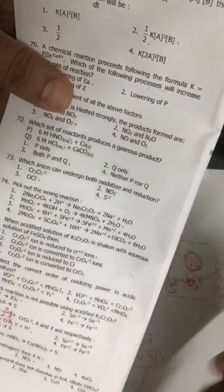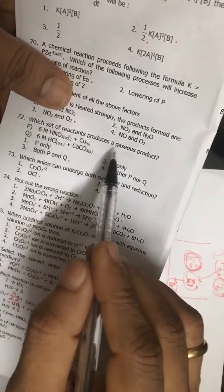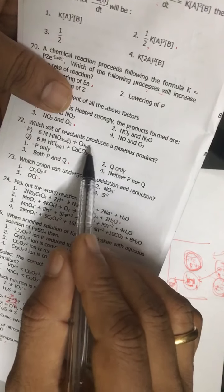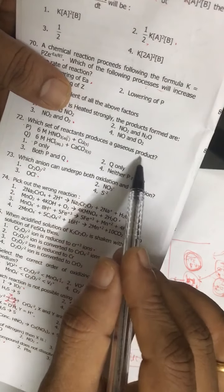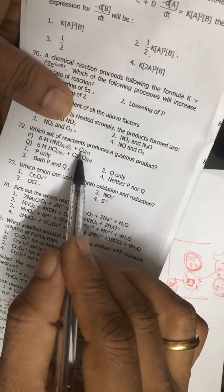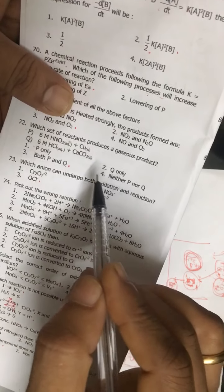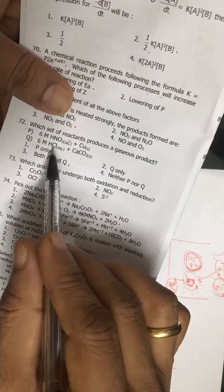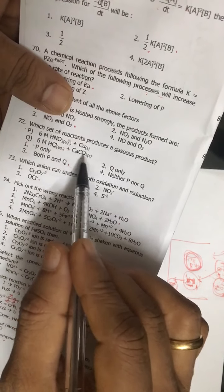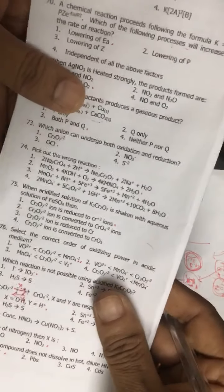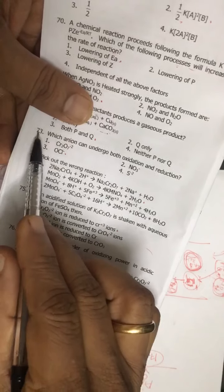Question number 72: which set of products produces a gaseous product? Concentrated HNO3 plus copper will produce NO2, and if CaCO3 is treated with HCl, if it is treated with any acid, we get CO2 gas. Calcium carbonate.